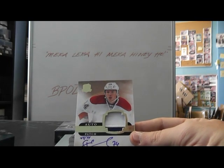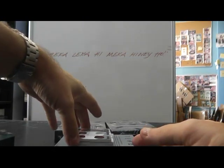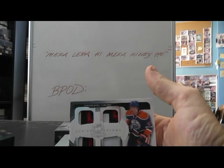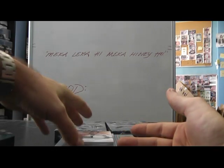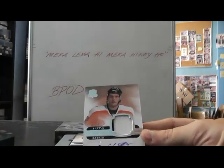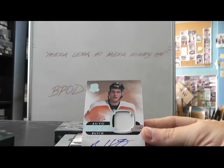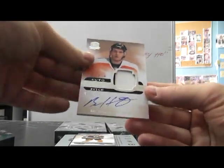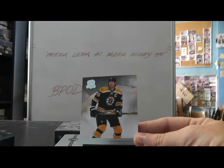Alexi Emelin, Canadiens, hand-numbered rookie patch, numbered to 74. One of only ten — Taylor Hall quad patch. Nice chunks in that one. Then we have Ben Holstrom, rookie patch — that was the Oilers for the quad patch. Flyers for this one. And we're going to end on Zdeno Chara, 249, Bruins. Seems like a lot of the same teams are getting a lot of the hits.